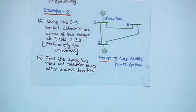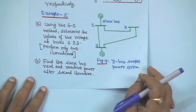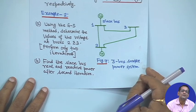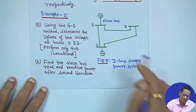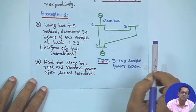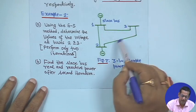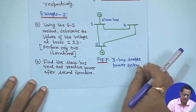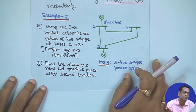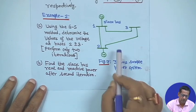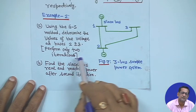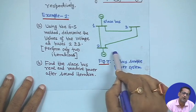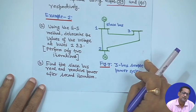Let us take an example on the Gauss-Seidel method. As far as a classroom exercise is concerned, we cannot consider a larger size of problem — for that you need a computer. So, we have taken a 3-bus power system where bus 1 is a slack bus and buses 2 and 3 are PQ buses. We will perform only 2 iterations so that things will be clear. This covers the case where both buses are PQ type, and another example will follow for a PV bus.